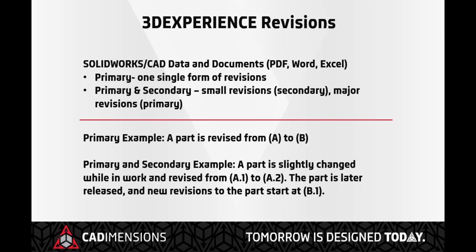Primary alone would be a single digit or letter, depending on your preferences, and will go up to the next increment every time you save a new revision. Primary and secondary give you the flexibility to make smaller revisions within the larger ones. Primary revisions are updated when a part is revised from a release state, while the secondary will update when a new revision is created while the files are still in the in-work or frozen state.